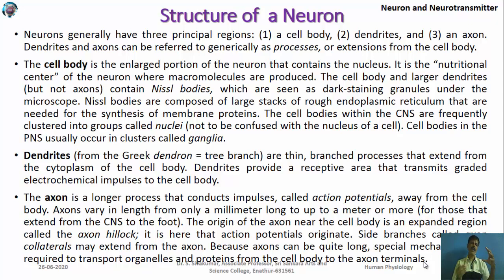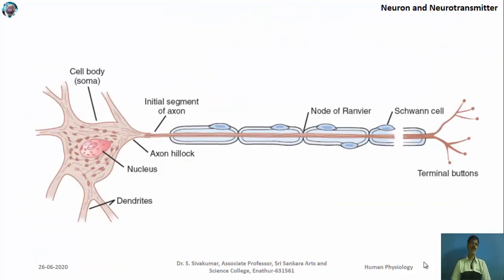The region where the axon attaches to the cell body is known as the axon hillock. The length of the axon varies depending on the type and function of the neuron. Looking at a simple diagram: the cell body contains a nucleus, small branches called dendrites extend from it, and a long process begins at the axon hillock. The axon sometimes contains special Schwann cells, with myelinated sheaths and nodes of Ranvier in between, which play a vital role in nerve impulse transmission. At the terminal end, button-like structures are present that are vital for signal transmission.